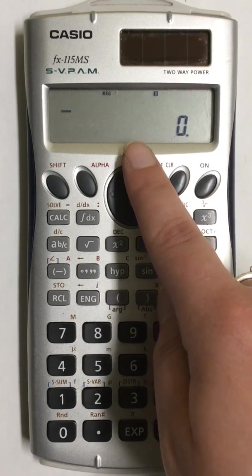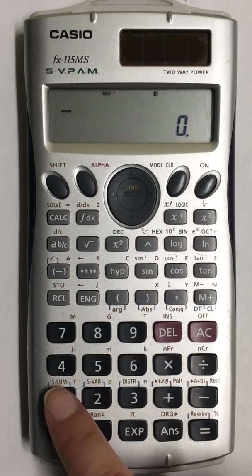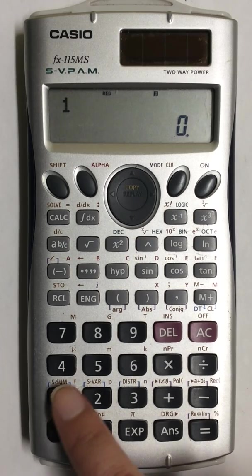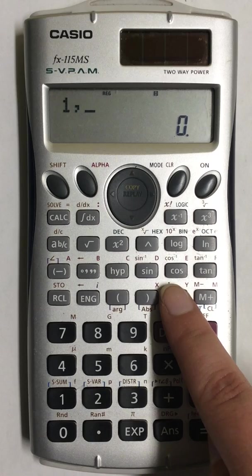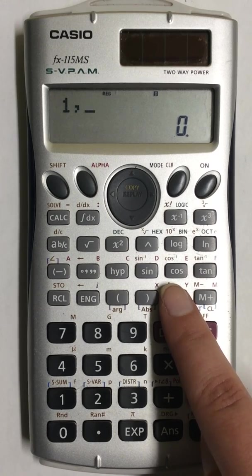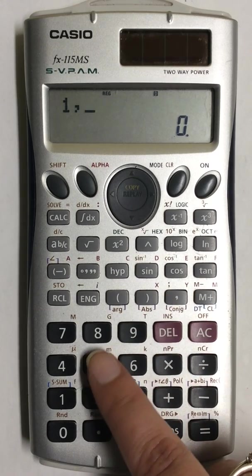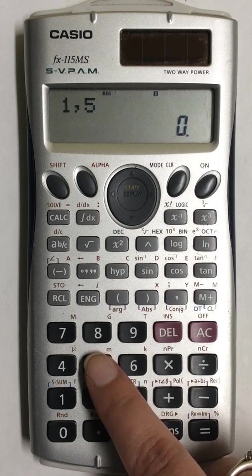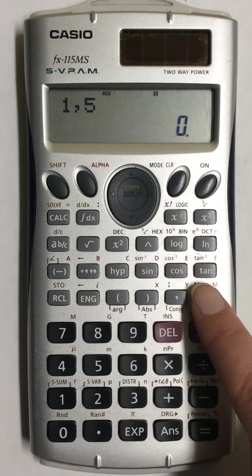So my first value for X is going to be 1. I then enter in a comma. I'm then going to enter my Y value, which is 5.